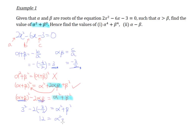So the answer to the first part is 12. Now let's move on to the 'hence' part: find the value of alpha to the power 4 plus beta to the power 4.